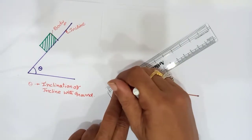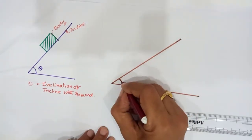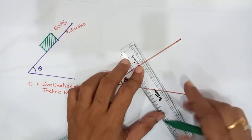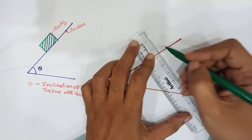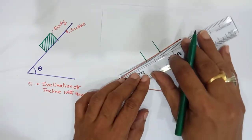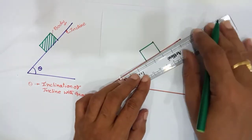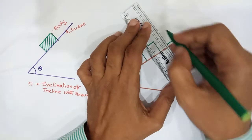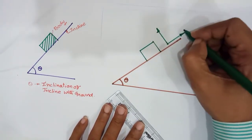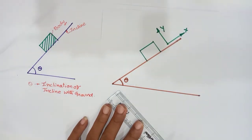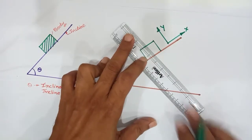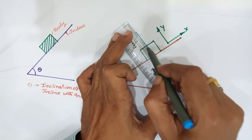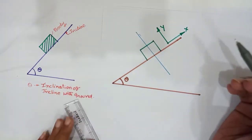We have the ground, the incline at angle theta, and the body is placed on it. Parallel to the incline is the x-axis, and normal to the incline is the y-axis. If you draw a line normal to the incline, this normal is parallel to the y-axis.